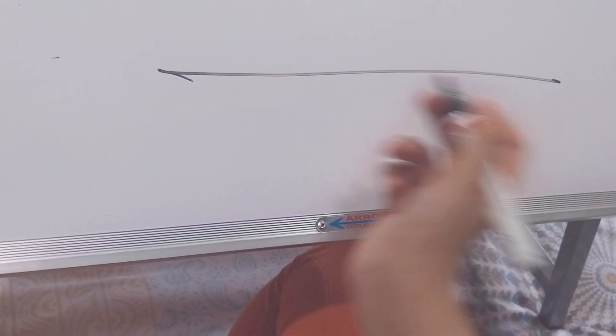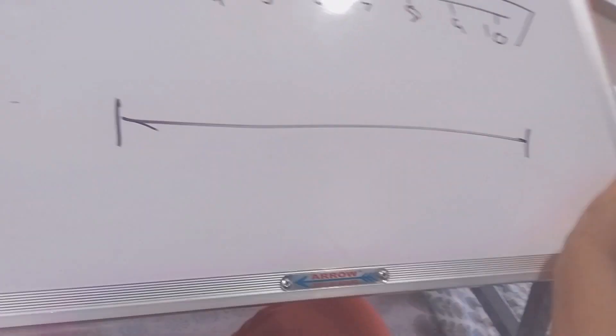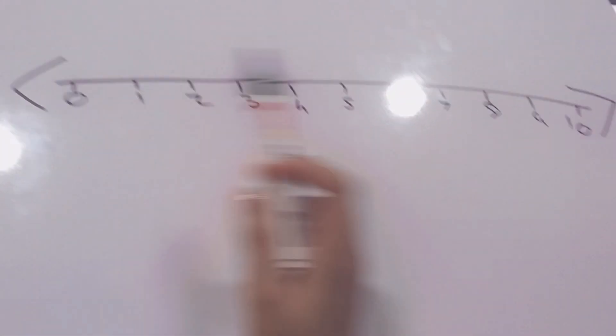And yes, one more thing, that this is also not allowed, alright? If you write this, your line is considered as line segment, not a number line. Yes, line segment is something different. We learn it ahead. So till then write arrows.